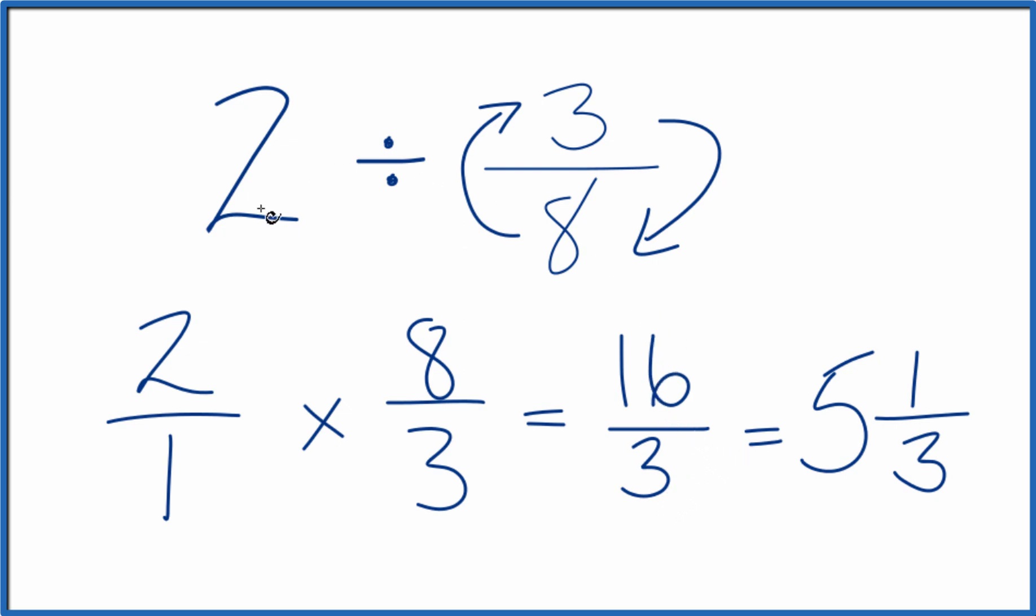That's it. This is Dr. B dividing 2 by 3 eighths. You get 16 thirds, or you could call it the mixed number 5 and 1 third.